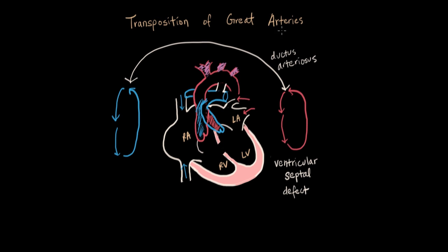When you see transposition of the great arteries, think of the fact that the two great arteries leading out of the heart are switched. We've got two independent cycles running parallel, and for this child to be alive, we need some kind of communication between them.